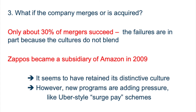What if the company merges or is acquired? Only about 30% of mergers succeed — the failures are in part because the cultures do not blend. Zappos became a subsidiary of Amazon in 2009 and seems to have retained its distinctive culture. It can depend on whether the acquirer permits a company to retain some autonomy or tries to push it to blend in. However, there are some challenges: new programs like Uber-style surge pay schemes have employees scrambling in a way that might undermine taking time for an act of kindness or having fun or lingering with the customer.